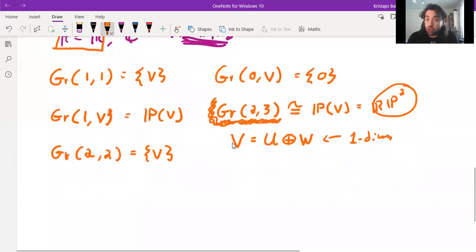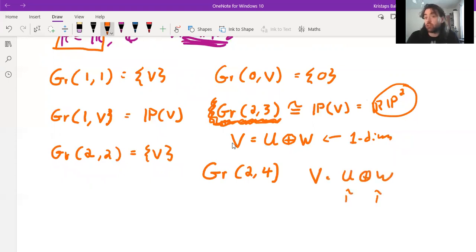So the first place where we get something actually truly new is the Grassmannian of two dimensional subspaces of a four dimensional vector space. Because if you tried to pull the same compliment trick, you find this association just with the two dimensional vector spaces. This full four dimensional vector space is just going to split up as a sum of two, two dimensional vector spaces.